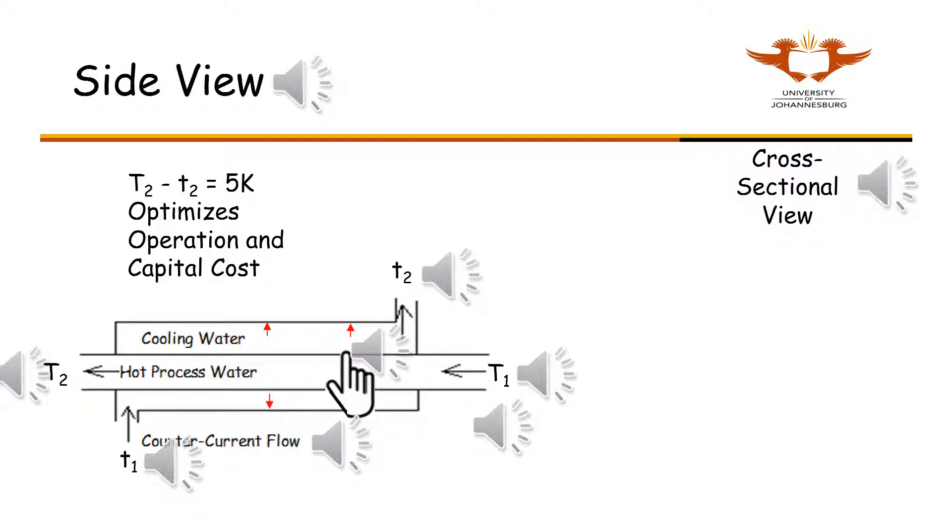The cross-sectional representation of the double pipe heat exchanger is given below. Here you can more clearly see that the cooling water occupies the space, or annulus, between the small and large diameter pipes.